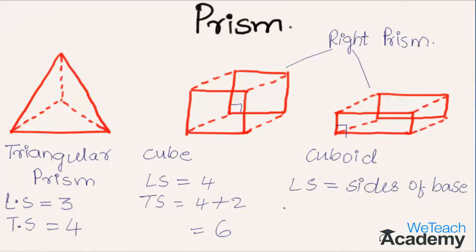The total surfaces of the prism are given by the number of lateral surfaces plus two more surfaces, since the top and bottom surfaces are also included.